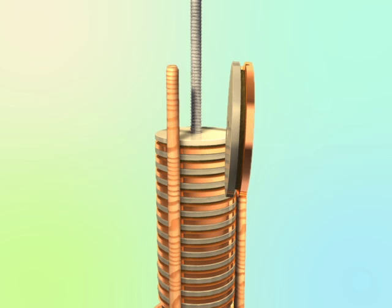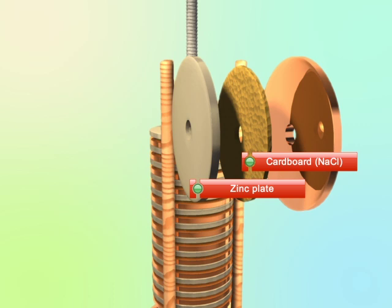The main parts of a Voltaic Pile are a zinc disc, a cardboard soaked in salt water, and a copper plate.